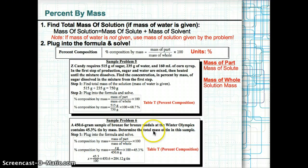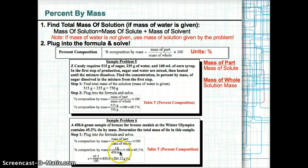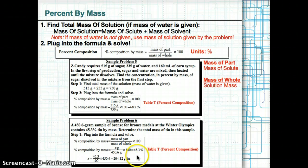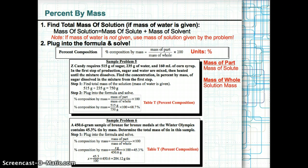Sample problem 6: A 450.6 gram sample of bronze has 45.3% tin by mass — find the total mass of tin. The mass of water isn't given, but the mass of the sample (solution) is 450.6 grams. Plugging in: 45.3% = (X g ÷ 450.6 g) × 100. Solving: X = (45.3 ÷ 100) × 450.6 = 204.12 grams of tin.